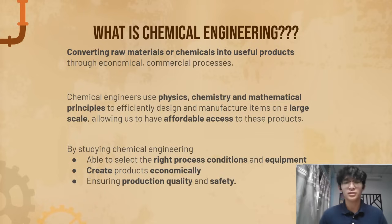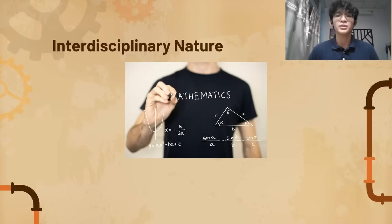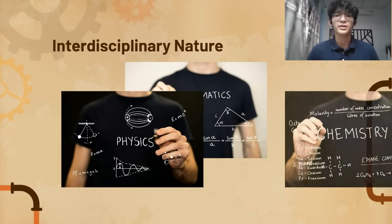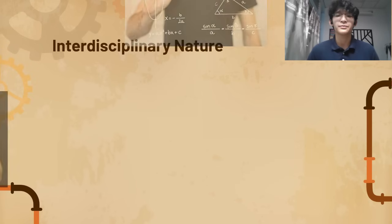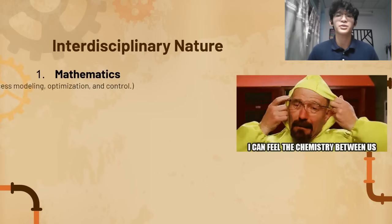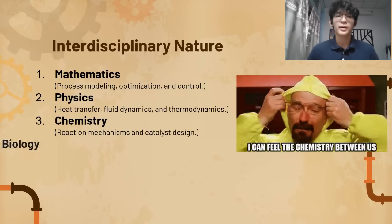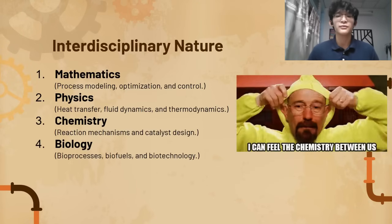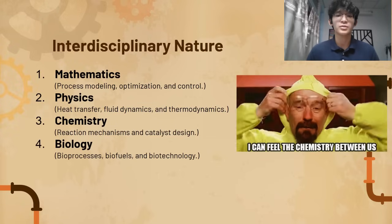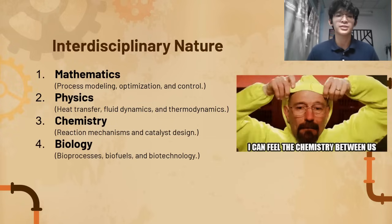By studying this course, you're able to select the right process conditions and equipment to create the products economically, ensuring production quality and safety. As a chemical engineer, you need to know mathematics, physics, and chemistry — these three main subjects. Biology is also one of the additional subjects you need to understand.